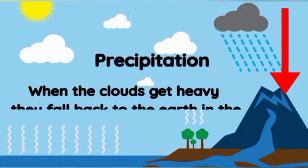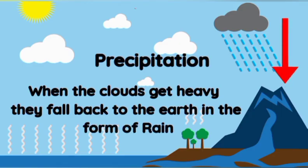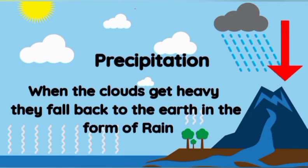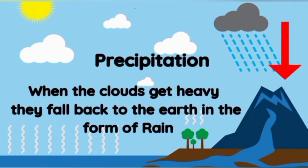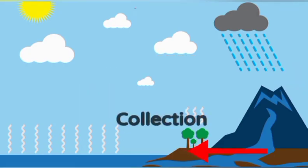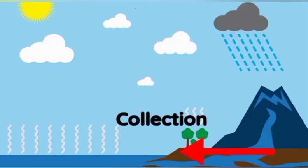Precipitation: when the clouds get heavy, they fall back to the earth in the form of rain. This is called precipitation. Collection: in this process, the water gets stored on the earth's surface in the form of oceans and rivers, or beneath the earth in the form of underground water.